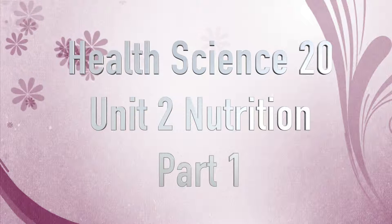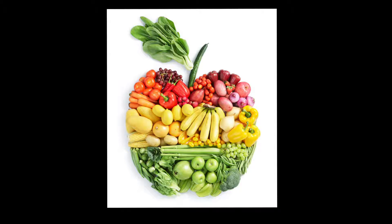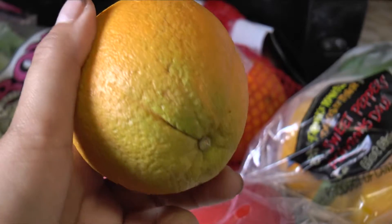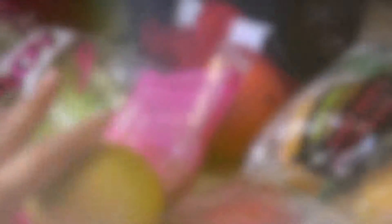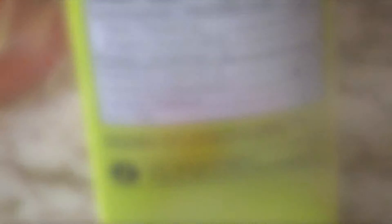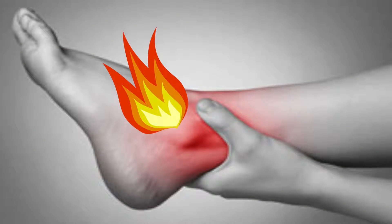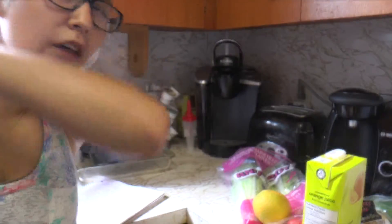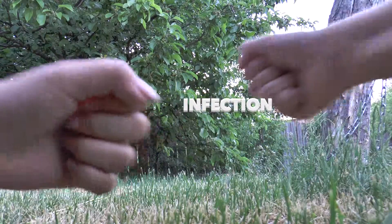Health Science 20, Unit 2: Nutrition, Part 1. Healthy connective tissues support your ability to move, exercise, and lift objects freely. In addition to medical treatments, physical therapy, and rest, eating healthy is important for healing tendons and ligaments. Some foods that promote healing include colorful produce, fish, walnuts, and flaxseed. Vitamin C, for example, helps connective tissues heal, may reduce inflammation associated with tendinitis, and strengthens the immune system.